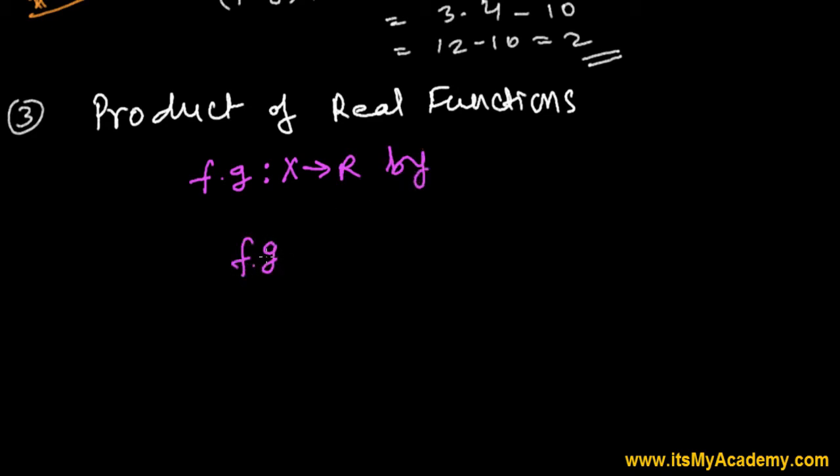fg, there is no need to keep a dot point even. fg of x, the product of f and g, fg of x can be defined as f of x times g of x, where always keep in mind x is a member of X, X means this bigger X, the subset of real numbers.